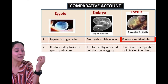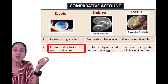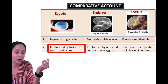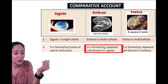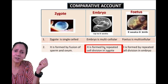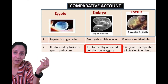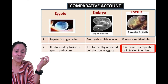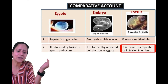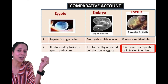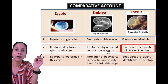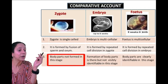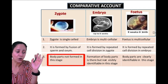The next point: the zygote is formed by the fusion of nuclei of sperm and ovum. Embryo is formed by the repeated cell division in the zygote, and the fetus is the end product of repeated cell division in the embryo.